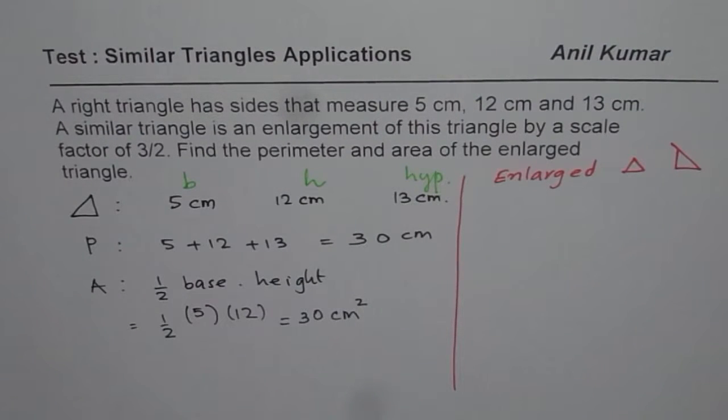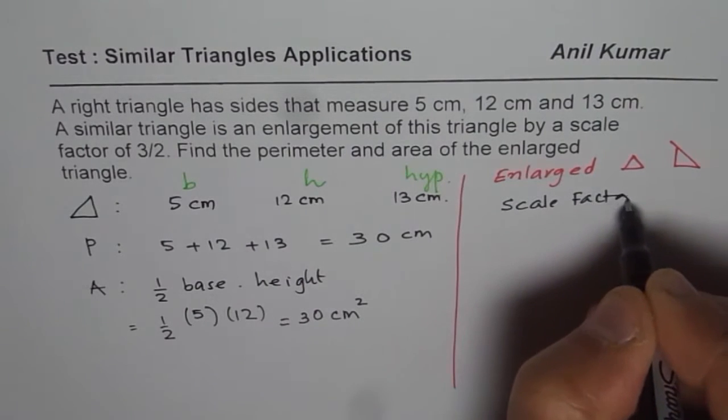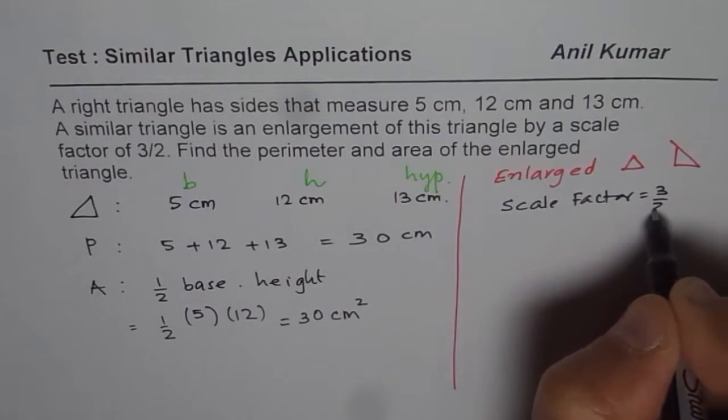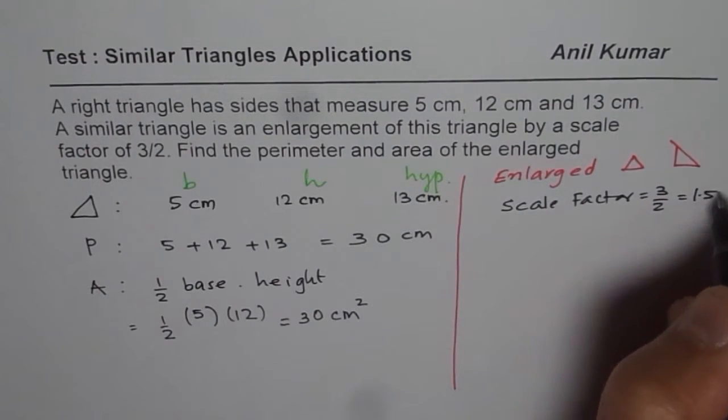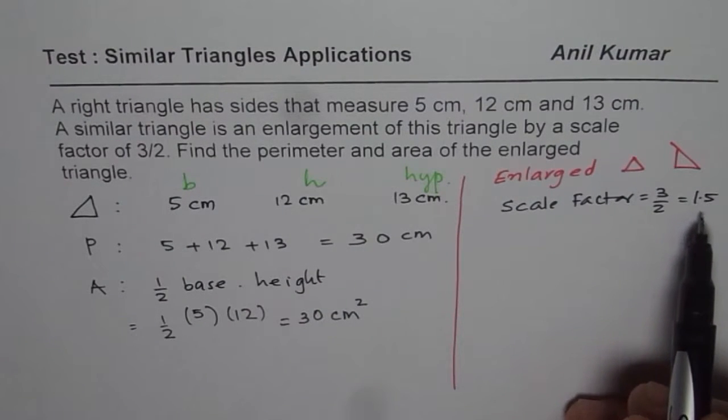Now in this enlarged triangle, what is the scale factor? Scale factor is 3 over 2, that is 1.5. That means each side will be multiplied by 1.5.